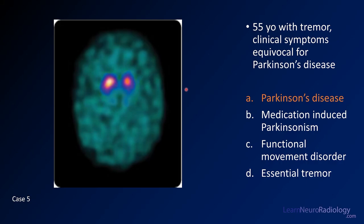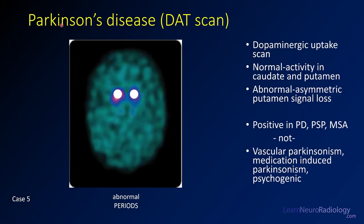To get this case right, you have to recognize what kind of scan this is. This is a DAT scan, or iodine-ioflupane scan, showing Parkinson's disease. What you see is an abnormal appearance — two round dots in the location of the caudate head, which is abnormal. You should also see uptake in the putamen, giving a comma appearance, which is normal. This is the period appearance, which is abnormal. The DAT scan is abnormal in Parkinson's disease and the Parkinson's plus syndromes including PSP and MSA. It is not positive in vascular Parkinsonism, medication-induced Parkinsonism, or psychogenic/functional diseases.